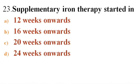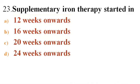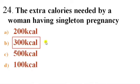Next question: Supplementary iron therapy is started at — Options: A) 12 weeks onwards, B) 16 weeks onwards, C) 20 weeks onwards, D) 24 weeks onwards. Answer is A — 12 weeks onwards. Next question: The extra calories needed by a woman having a singleton pregnancy — Options: A) 200 kcal, B) 300 kcal, C) 500 kcal, D) 100 kcal. Answer is B — 300 kilocalories.